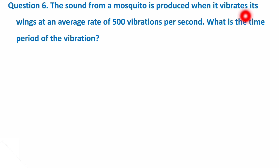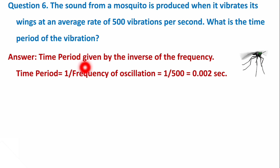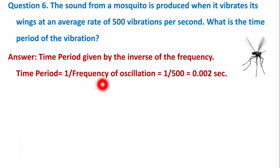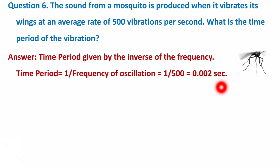Next question: The sound from a mosquito is produced when it vibrates its wings at an average rate of 500 vibrations per second. What is the time period of the vibration? Time period = 1 ÷ frequency = 1 ÷ 500 = 0.002 second.